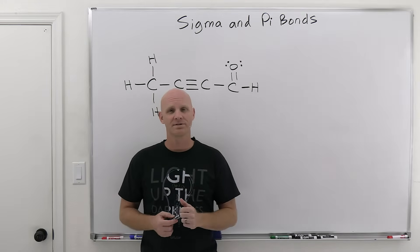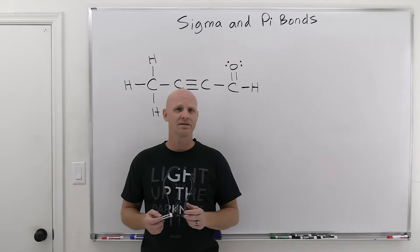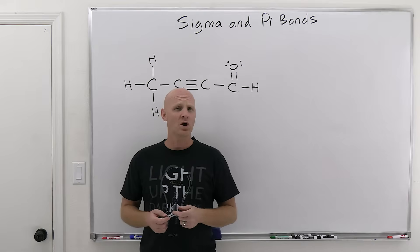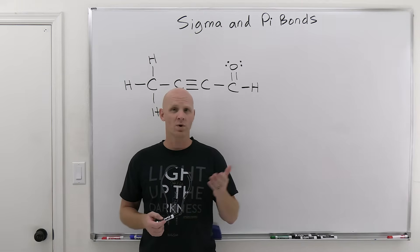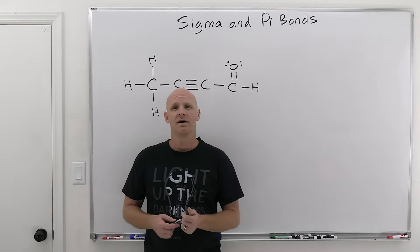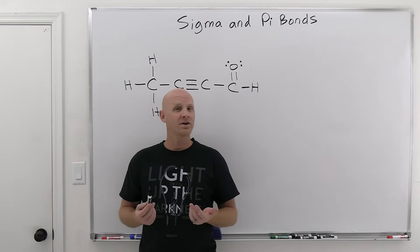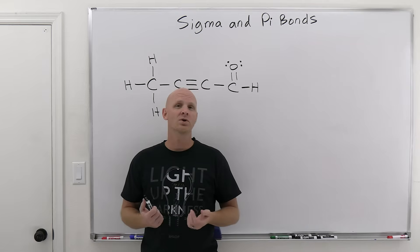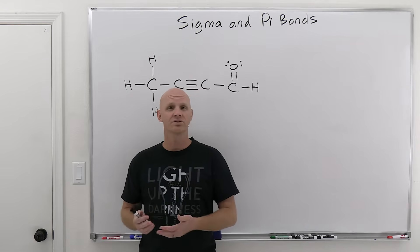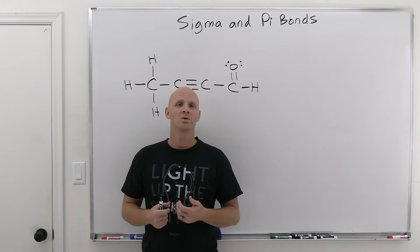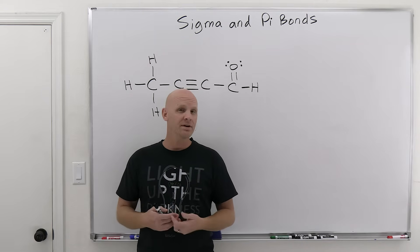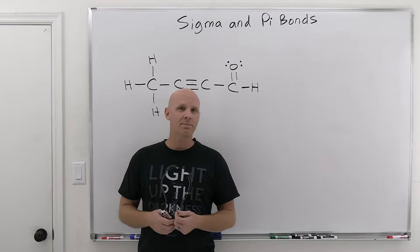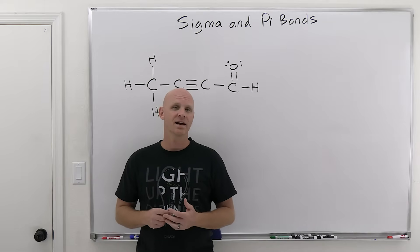Sigma and pi bonds are going to be the topic of this lesson. We're going to find out that all covalent bonds are either sigma or pi bonds. We'll find out that all single bonds are sigma bonds, and therefore pi bonds only show up in double and triple bonds. We'll find out what kind of orbitals are overlapping, and how they're overlapping, and how to identify each in a Lewis structure.